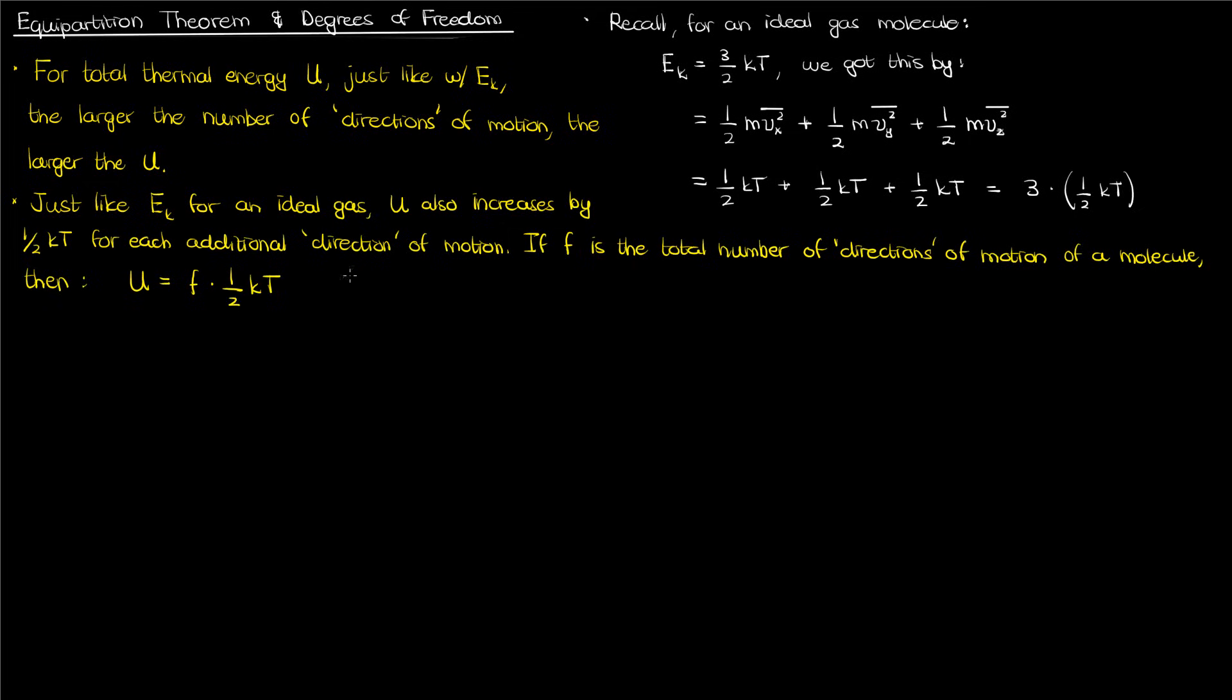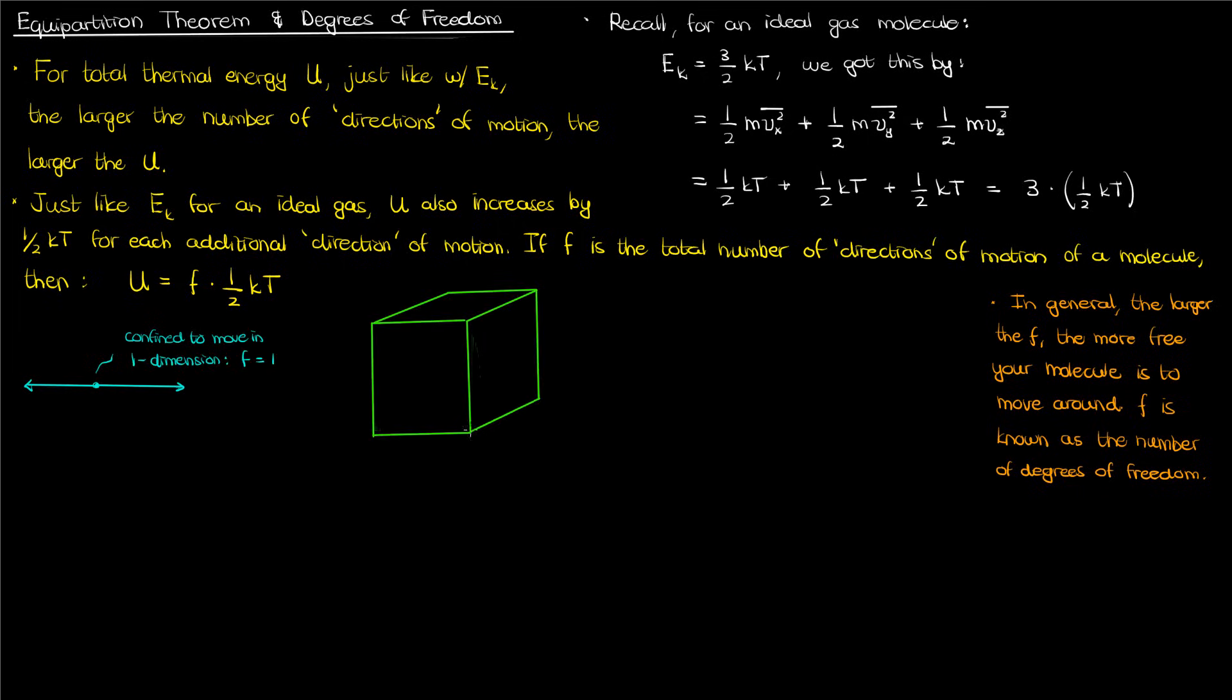Note here that I'm being careful to use quotes with the word direction, but in general the higher the number F, the more free your molecule is to move around. That's why F is known as the number of degrees of freedom. For example, if we have a molecule confined to move in one dimension, the molecule has only one degree of freedom and is less free to move around compared to a molecule that can move in three dimensional space, which would have three translational degrees of freedom.